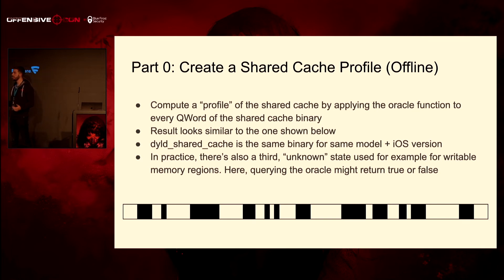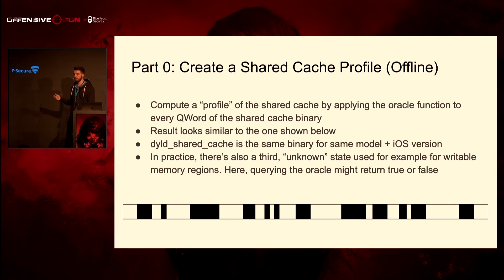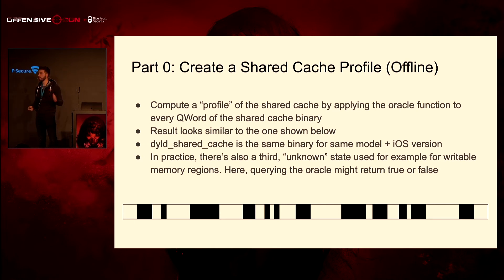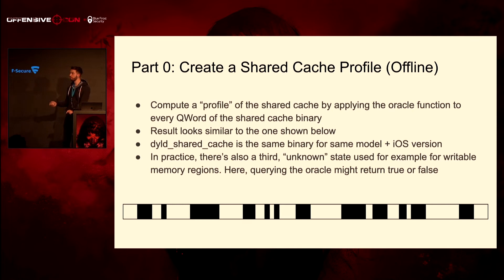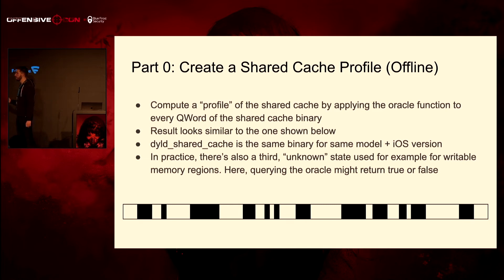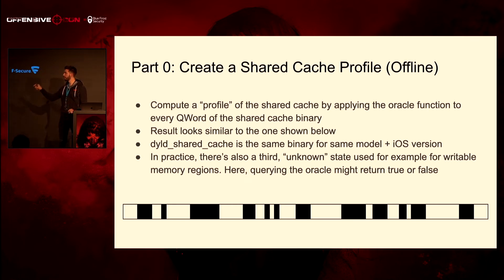You take the oracle function and run it over the entire shared cache. The result is basically a bitmap — bit one or bit zero depending on whether the function returns true or false. At the bottom you can see an example profile: the white area means it wouldn't crash when probing there, and the black area means it would crash. In practice there's a third state, because there's a writable area in the shared cache and you don't know at runtime what will be there.